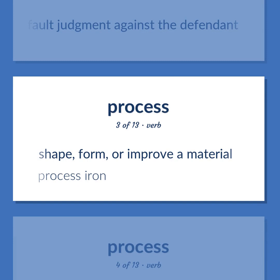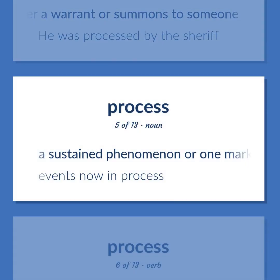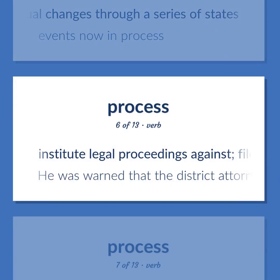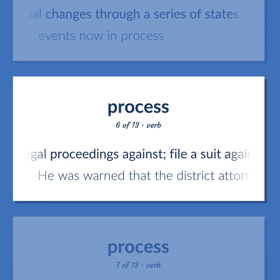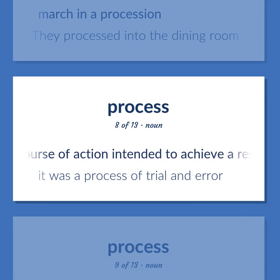Process (verb): shape, form, or improve a material — 'Process iron.' Deliver a warrant or summons to someone — 'He was processed by the sheriff.' A sustained phenomenon or one marked by gradual changes through a series of states — 'Events now in process.' Institute legal proceedings against; file a suit against — 'He was warned that the district attorney would process him.' March in a procession — 'They processed into the dining room.' A particular course of action intended to achieve a result — 'It was a process of trial and error.'